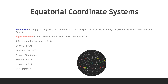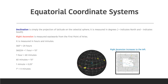Before moving on, a quick note about the first point of Aries. On or around March the 21st, which is the spring equinox, the sun slowly moves from the south to the north across the celestial equator. The first point of Aries therefore marks the zero of right ascension — that's something you need to know.